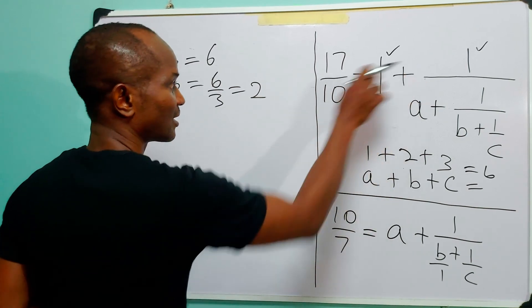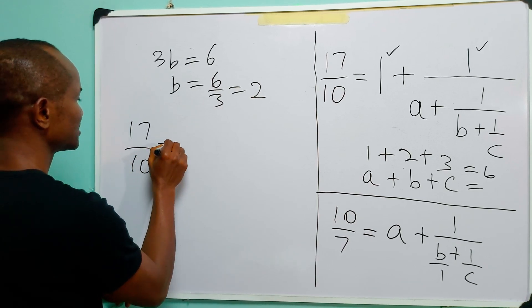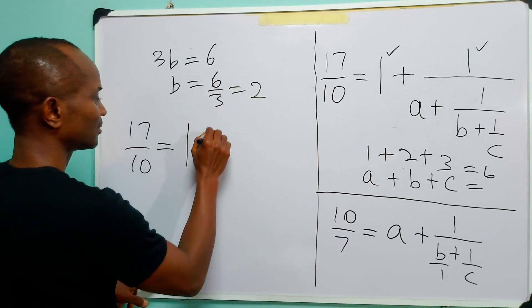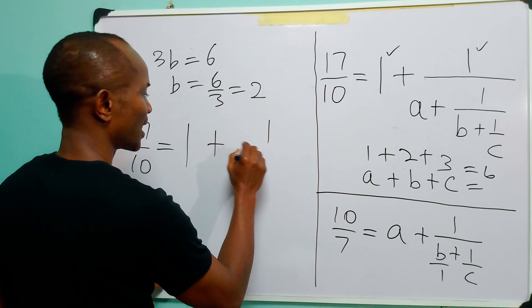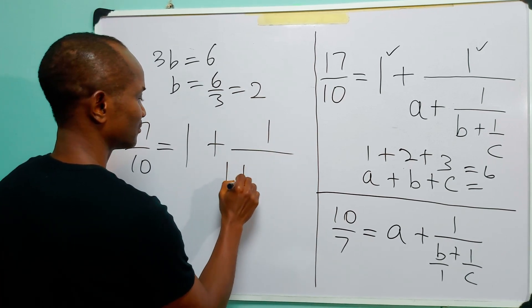So you can write out this fraction as 17 over 10 is equal to 1 plus 1 over 1 plus 1 over 2 plus 1 over 3.